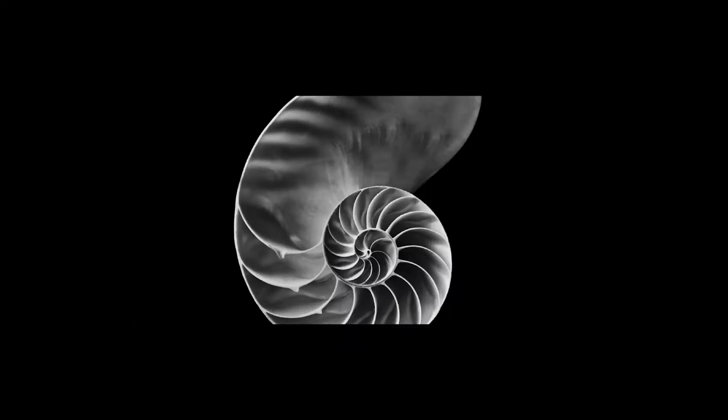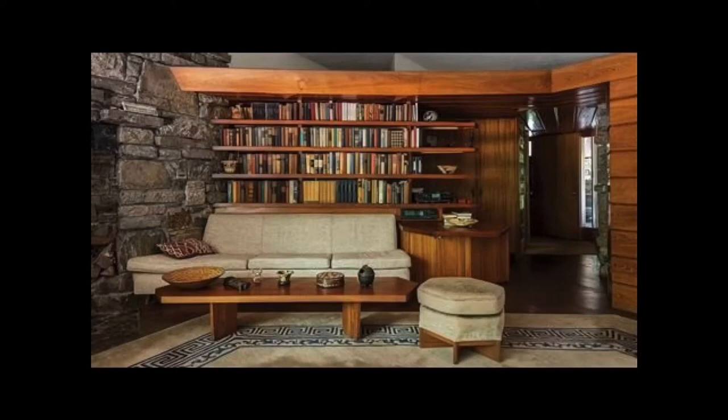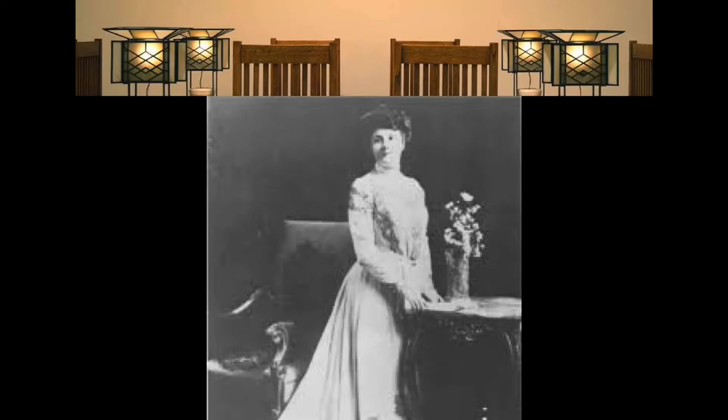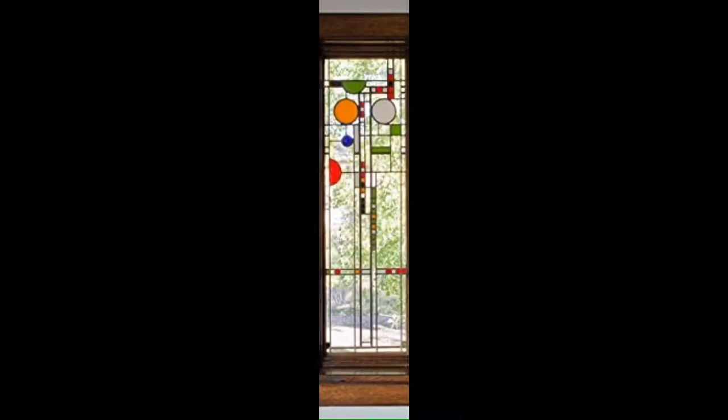Frank Lloyd Wright was inspired by nature and that museum was inspired by a shell or a nautilus shell. When he designed buildings, he wanted to design the whole thing. He not only designed the building, but he designed the furniture and the rugs, sometimes what the hostess would wear at the house, the place settings, and even the windows.